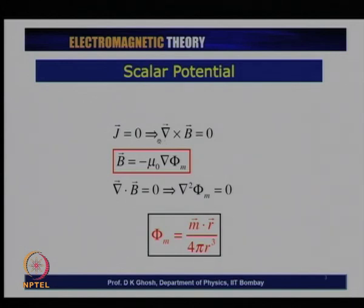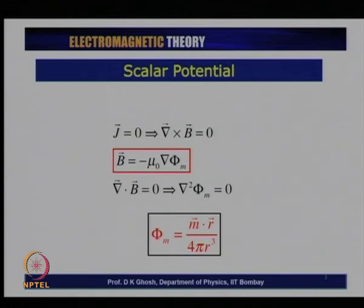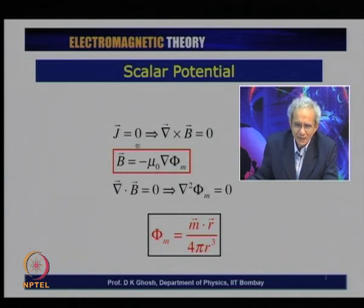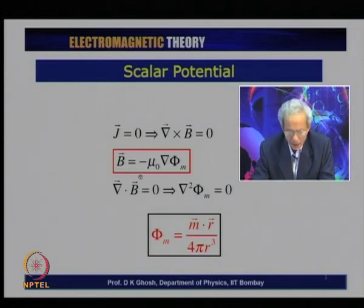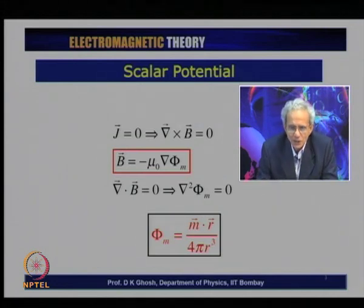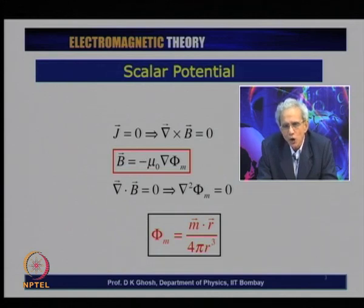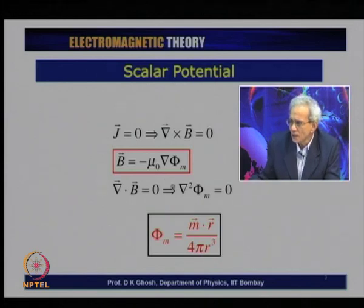In such a situation, like we defined for an electric field, we could also define a scalar potential. We define a scalar potential such that minus mu-0 times the gradient of the scalar potential gives the magnetic field. We will see later that the real definition should express the field H in terms of the scalar potential by simply saying H equals minus grad phi_m. Now, del dot B equals zero, which is Gauss's law, converts this equation to del-squared phi equals zero, where phi_m is the magnetic scalar potential.